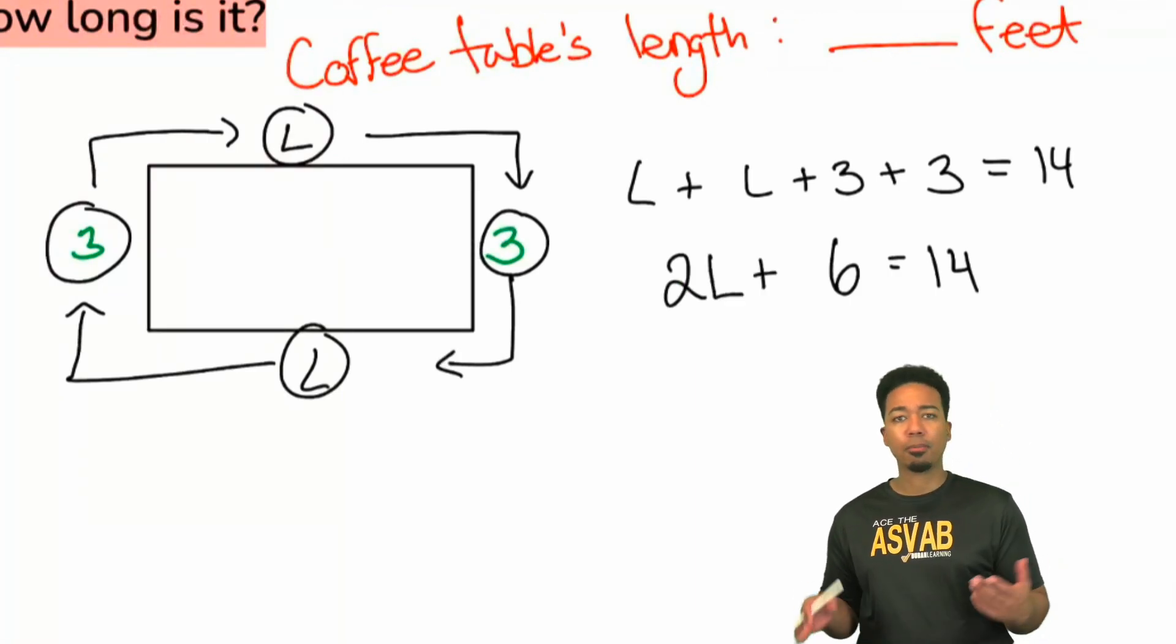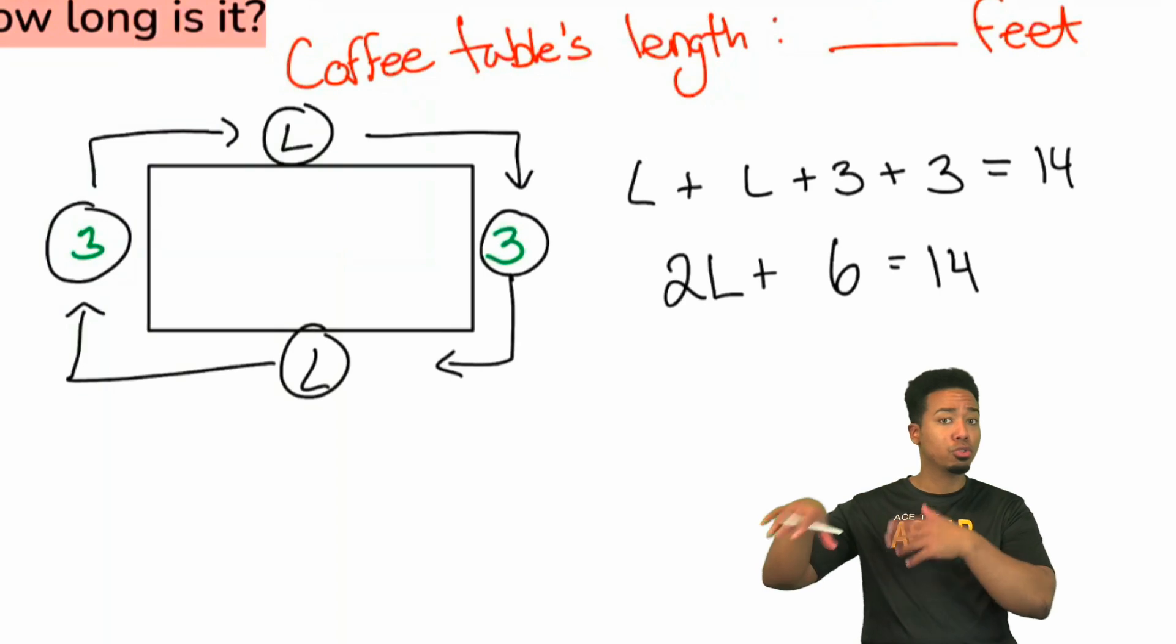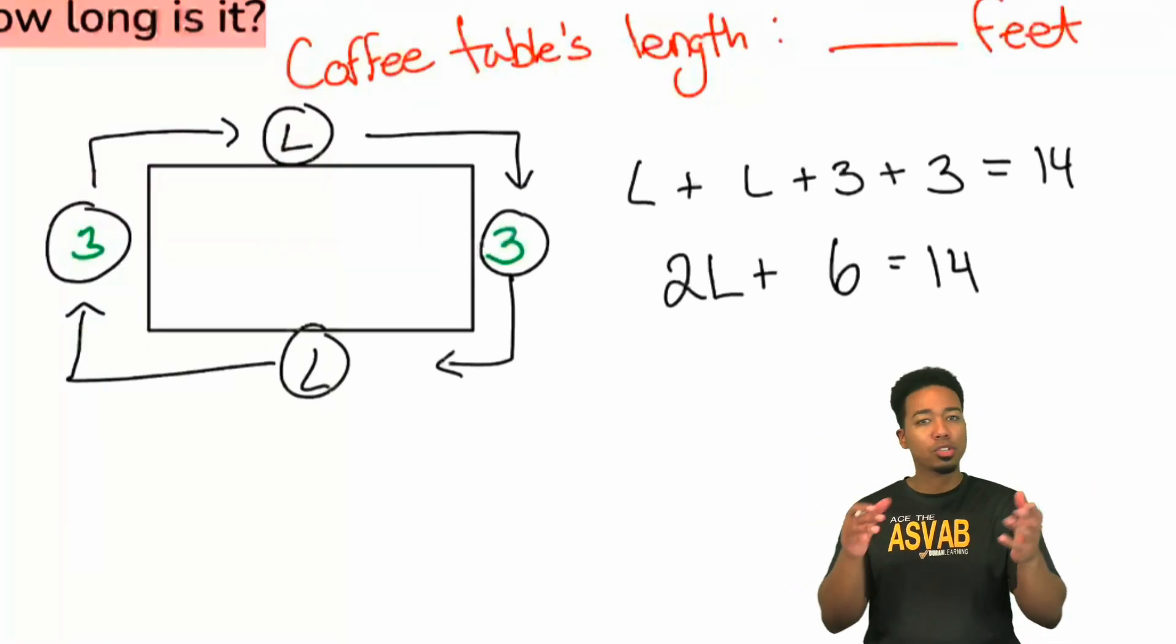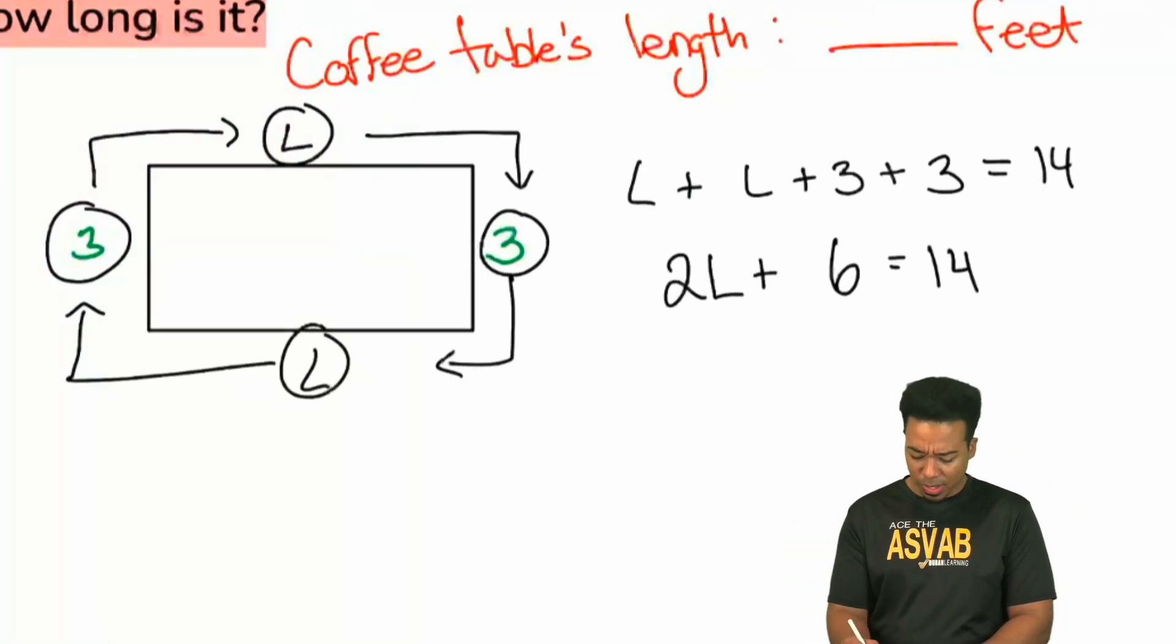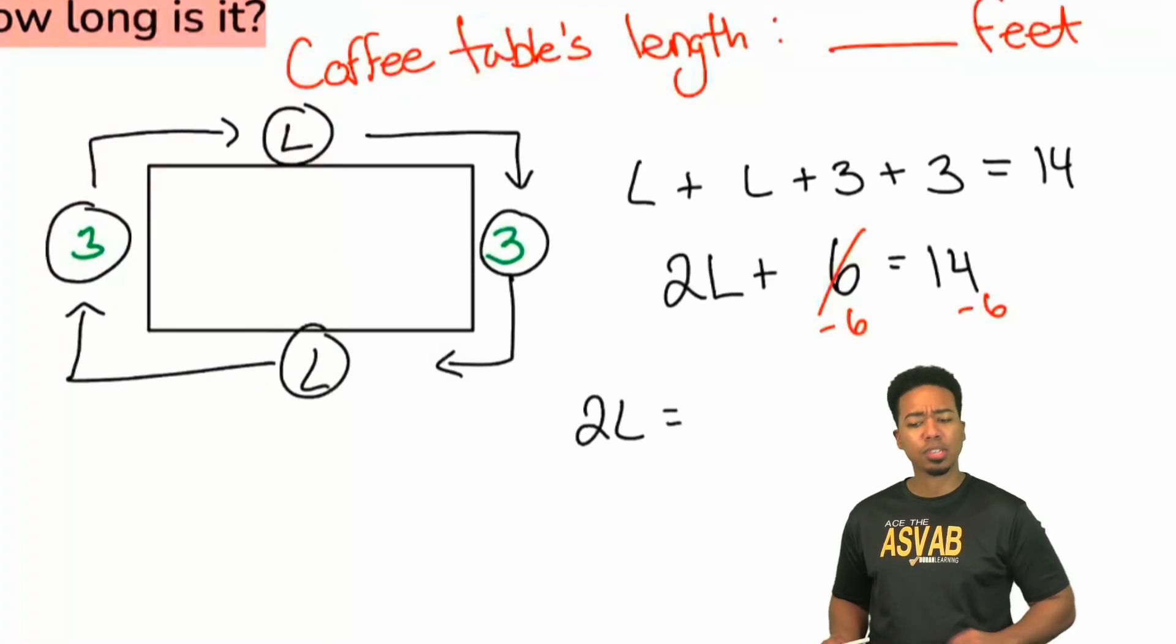So essentially, my party people, if we take away those two threes, so six, if we just take away the three and the three, we can see what those two lengths are going to be. If we take away the six, everybody, if we take away the six, what do we have left? What's 14 minus six? Help me out. What's 14 minus six going to be? Right, that'll end up being eight.